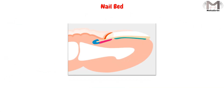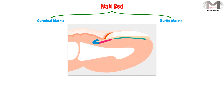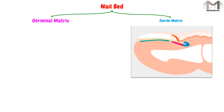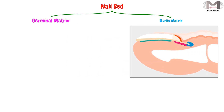As we said, the nail bed consists of two zones: the germinal matrix and the sterile matrix. Regarding the germinal matrix, it is the area that exists deep to the proximal nail fold, or under the proximal nail fold, and proximal to the lunula.